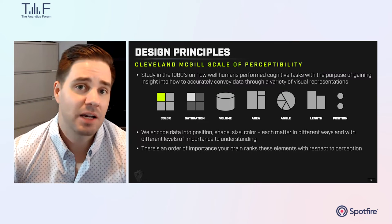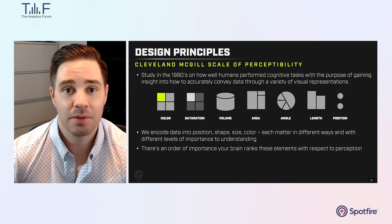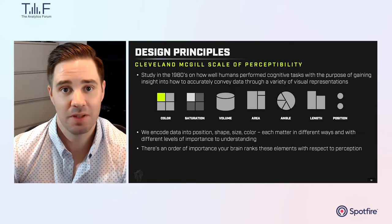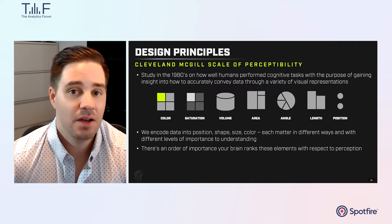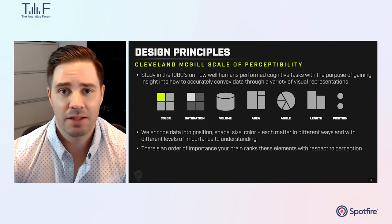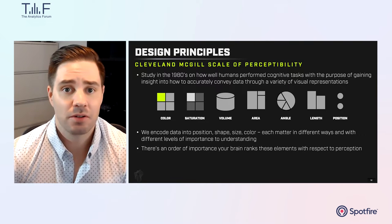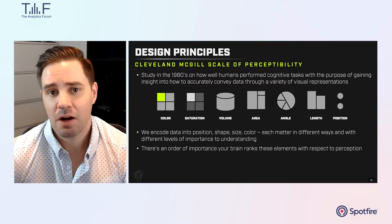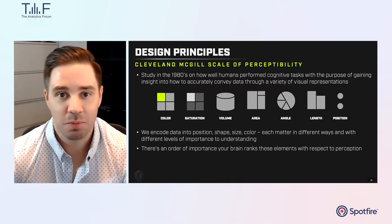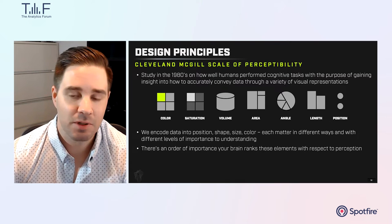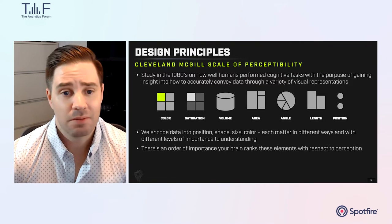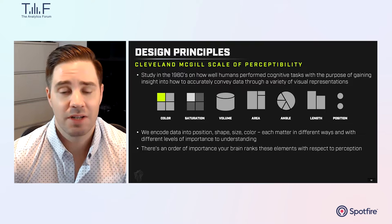I want to discuss the Cleveland-McGill Scale of Perceptibility — a study from the 1980s on human cognitive abilities and how we interpret data through a variety of charting methods. The Cleveland-McGill research on graphical perception highlighted the importance of accurately conveying data through visual representations. They found that certain visual cues, like position along a common scale, are more accurately and quickly perceived than others, such as angle or area — which is partly why data visualization experts are not fans of pie charts. When designing dashboards, it's critical to prioritize these effective cues so users can understand data at a glance.